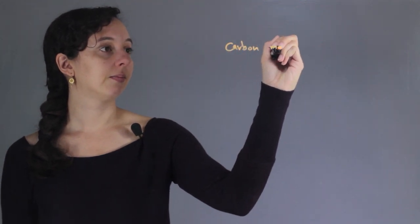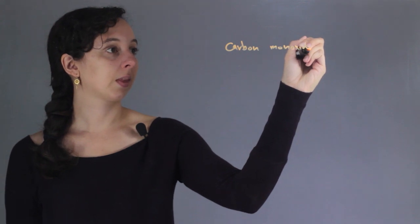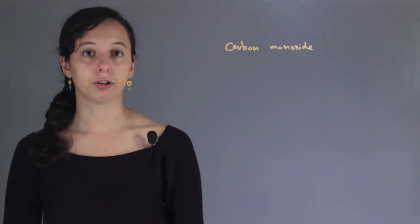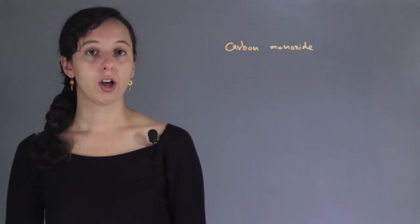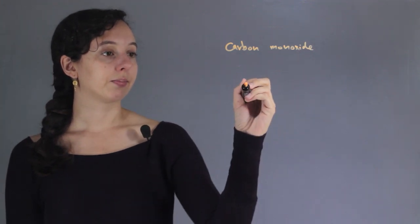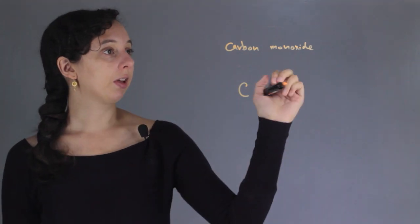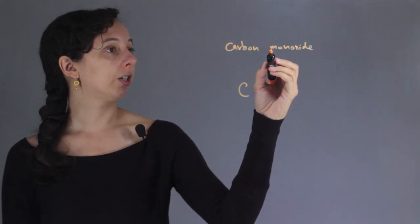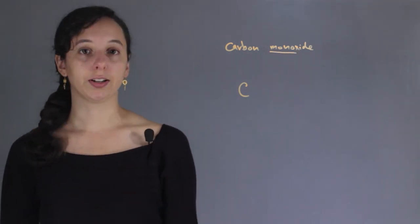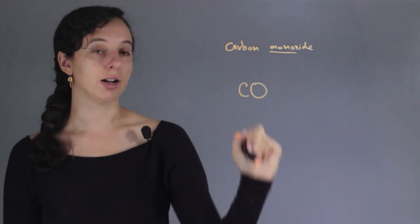First of all, we know that we're reacting carbon monoxide, and we can find the structure through its name. We have only one carbon because they would have told us if we had two or more. We know we only have one oxygen because of the prefix mono. So this is our structure for carbon monoxide.